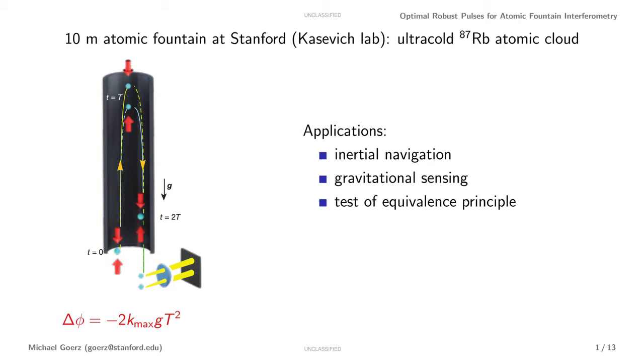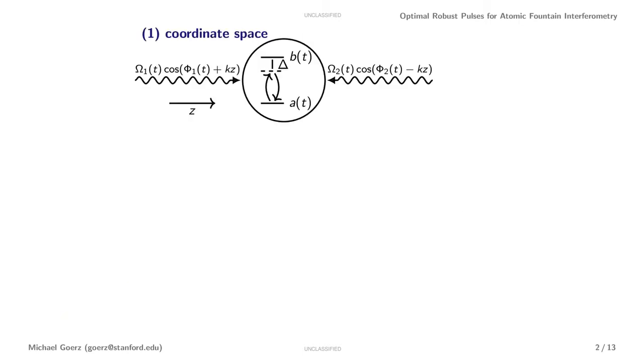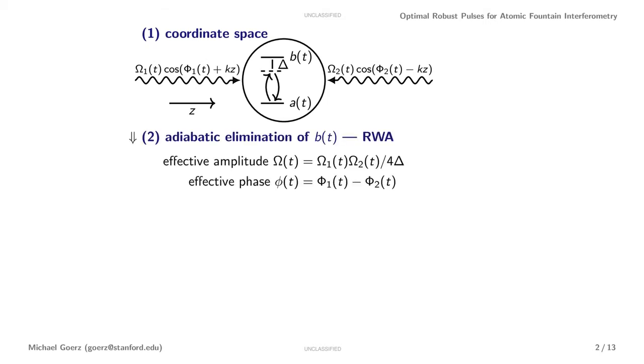So let's look a little more closely at what happens with the laser pulses. First, we have two levels of the rubidium atom, this is the d2 transition, and we have two counterpropagating standing waves. Because the frequencies of the lasers are far detuned from the transition, we can adiabatically eliminate the excited level. So the dynamics happen only in this complex amplitude A with a single effective amplitude and a single effective control phase.